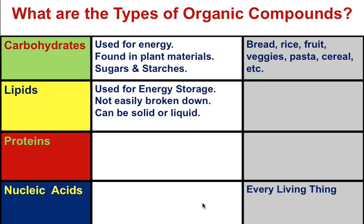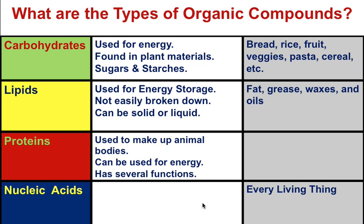Lipids are used as an energy source as well, but more for energy storage. They're not easy to break down because they're very large, long molecules and can be either solid or liquid. Examples include fats, greases, waxes, and oils. Proteins are what animals use to make their bodies — your bone, muscles, skin, and hair are all made of protein. They can be used as an energy source if no carbohydrates are available; when the body runs out of fats and carbs, it turns to lean muscle mass. Examples include meats, eggs, milk, and beans.